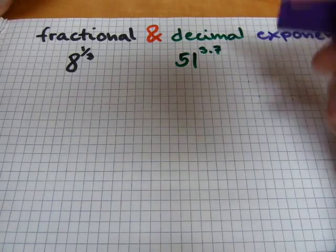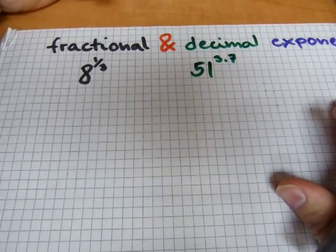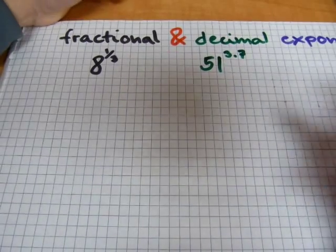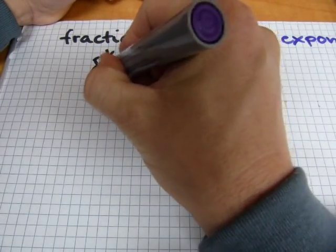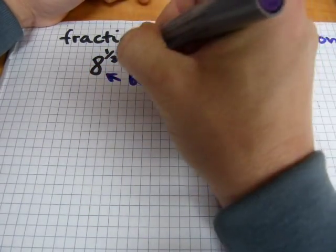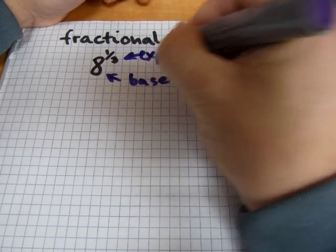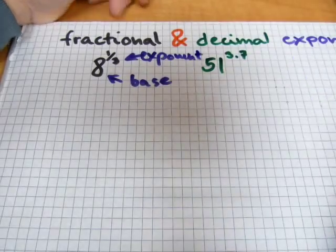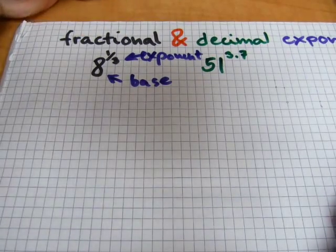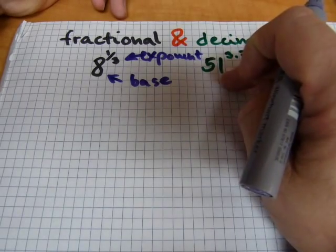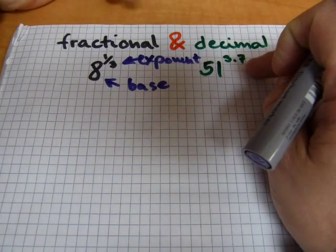Just as with any exponential formatted numbers, we have here a base and we have an exponent. The 1 third is the exponent and the 8 is the base. 51 is the base and 3.7 is the exponent.